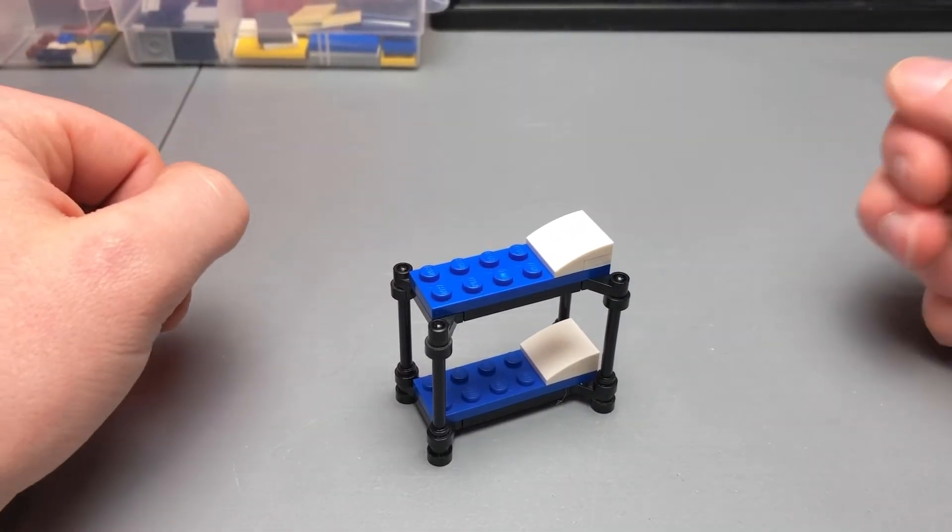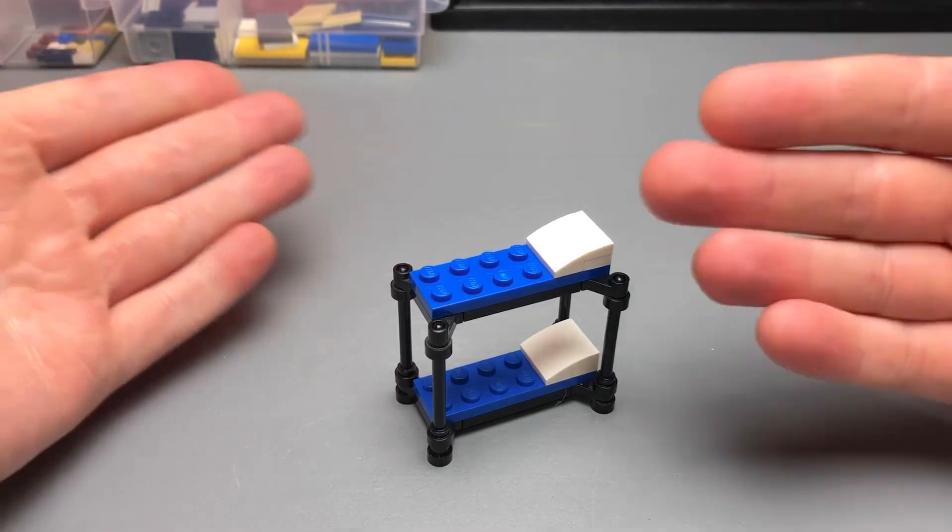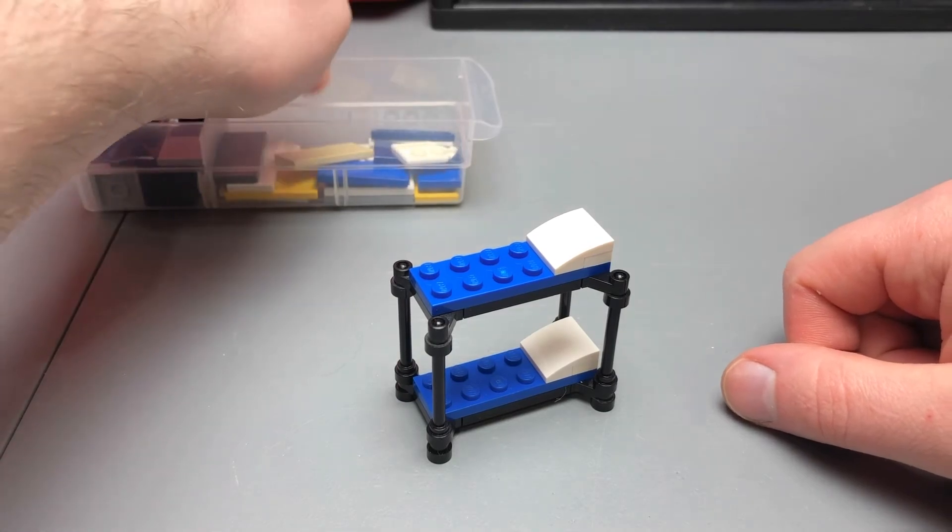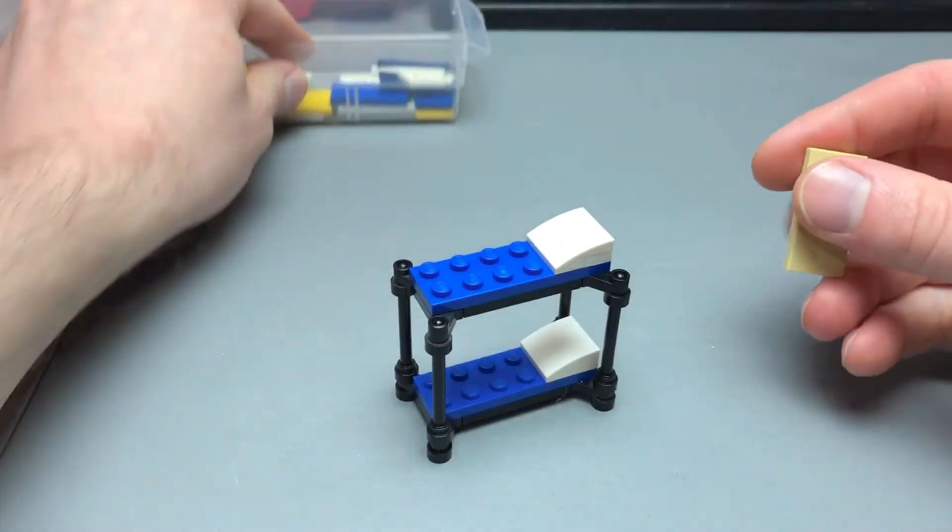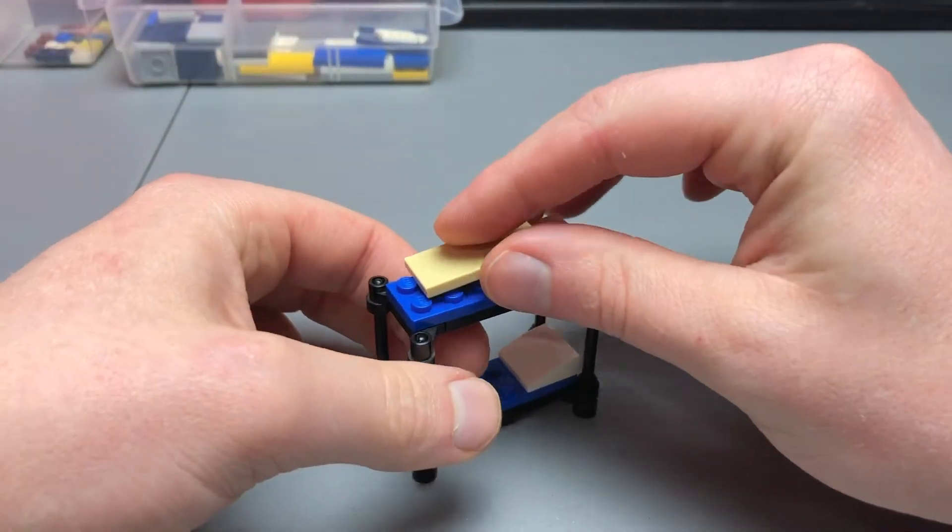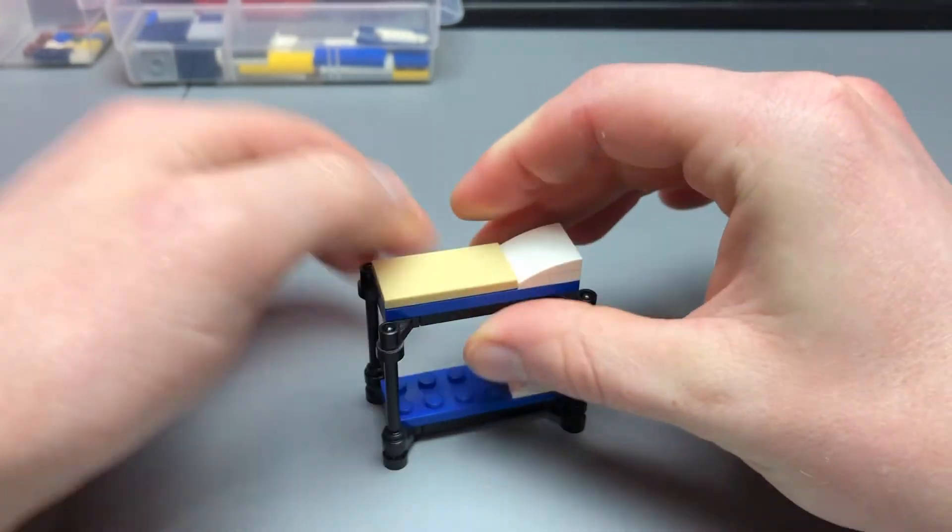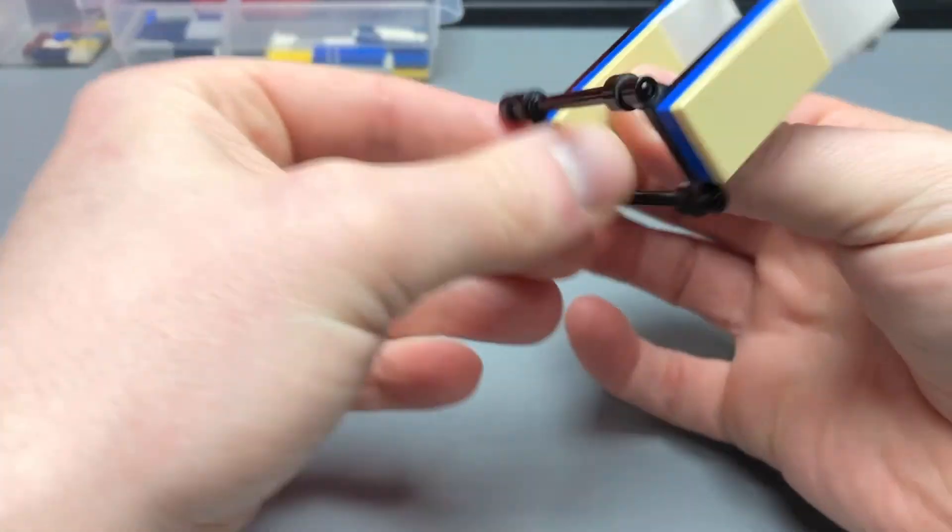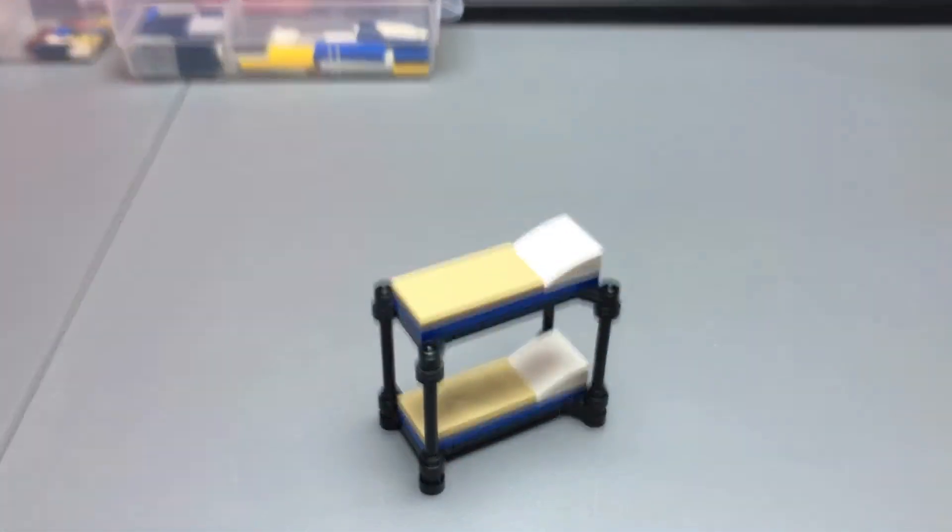Now, if you don't like seeing studs, which some people don't, you can always cover it with tiles. You know, so just for the heck of it, we'll put some tile pieces on there. And there we go.